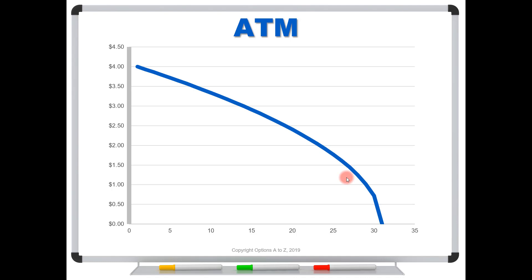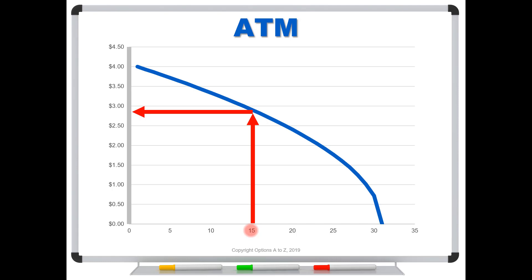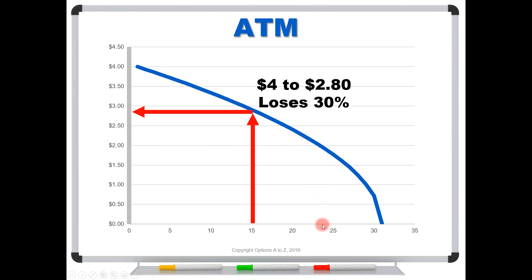This blue curve is the one everybody sees in the options books, and they assume all options follow it — and that's just not true. Because they believe that, when using covered calls with out of the money options, they think they should hold closer to expiration to soak up all of that premium. But look at how the ATM actually decays: after 15 days, most traders think it loses half its value, but it's actually trading around $2.80 — it's only lost 30% of its value. The option actually hits half its value only when about 25% of the time remains.